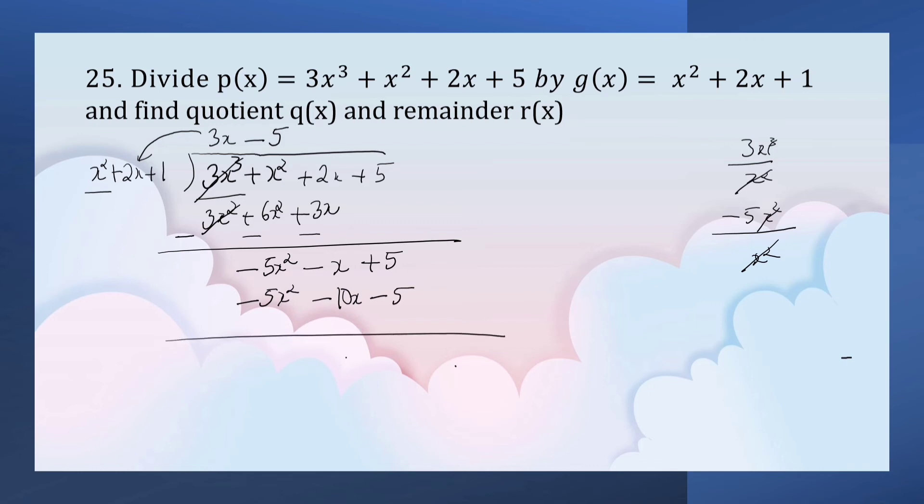Change the sign of the second row. 5x² cancels. This is 9x, bigger number sign. Here plus 10.